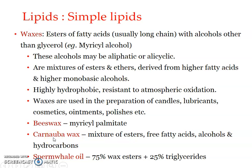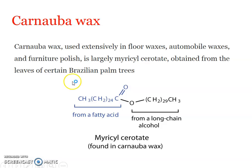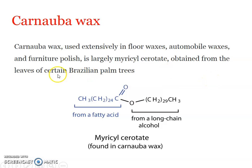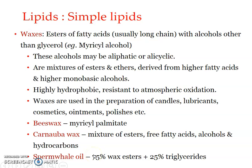Another naturally occurring wax is carnauba wax, which is a mixture of esters, free fatty acids, alcohols, and hydrocarbons. Carnauba wax is used extensively in floor waxes, automobile waxes, and furniture polishes. Its major component is myricyl cerotate. It is a plant wax that can be extracted from the leaves of certain Brazilian palm trees.